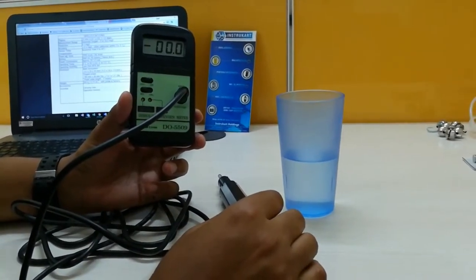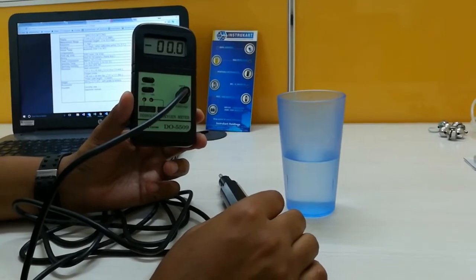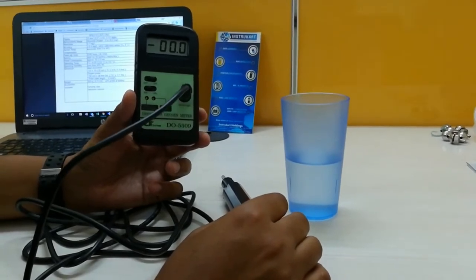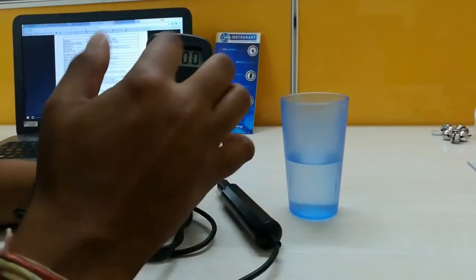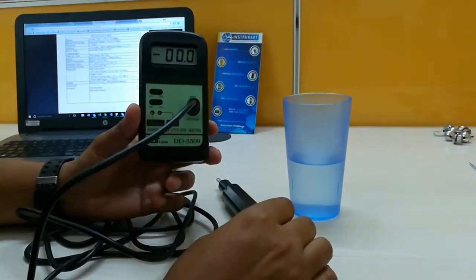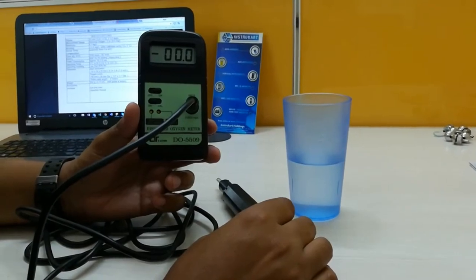The measurement range is 0 to 20 mg per liter. The resolution is 0.1 mg per liter and the accuracy is plus or minus 0.4 mg per liter.